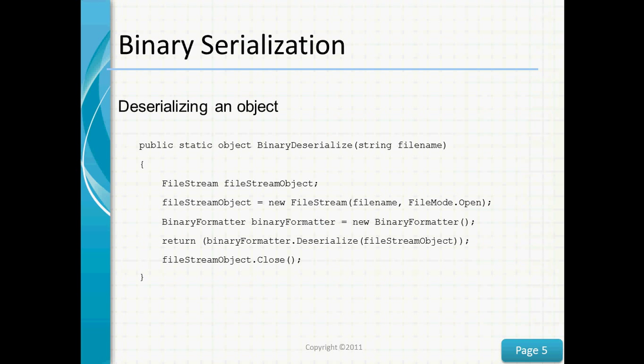To deserialize an object, we'll again create a FileStream object, this time passing in file mode Open and a filename. Next, we'll create a BinaryFormatter, and by calling the BinaryFormatter's deserialize method using the FileStream object, we return the original object. Finally, let's close the FileStream object.